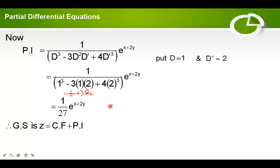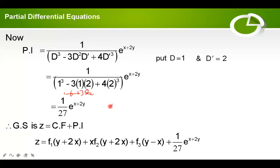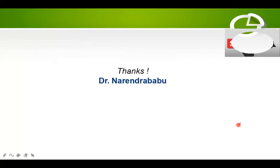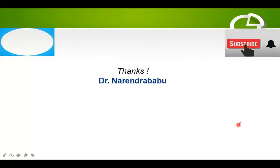Therefore the general solution is z = CF + PI, and this is the final solution. In the next lecture, we will discuss about the case when the denominator is zero and how to find the PI. Thank you for watching. Please subscribe.